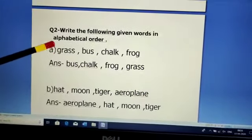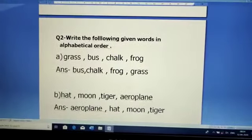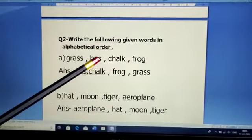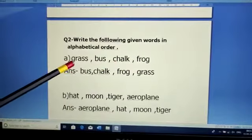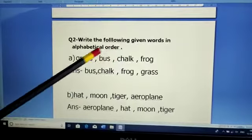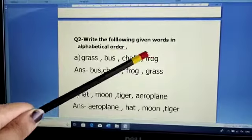So let's come to the first part A. What are the words here? Grass, bus, chalk and frog. So now we will see the first letter of each word. G for grass, B for bus, C for chalk, F for frog.